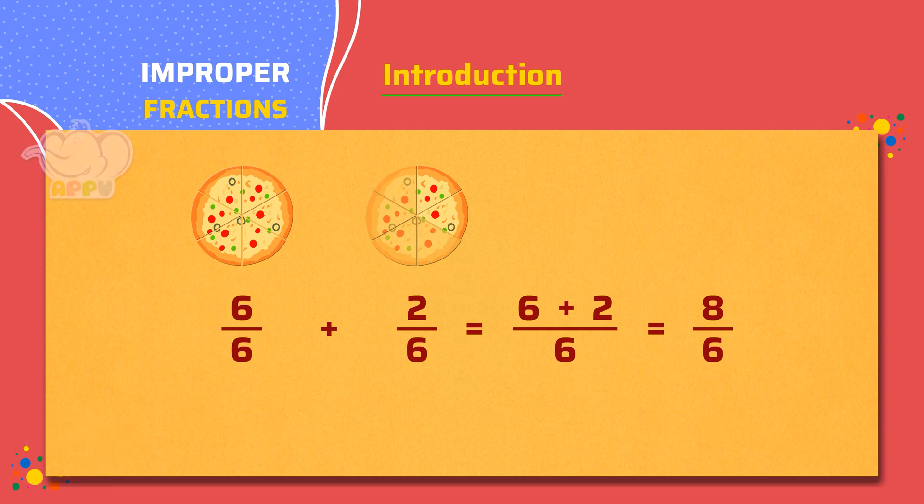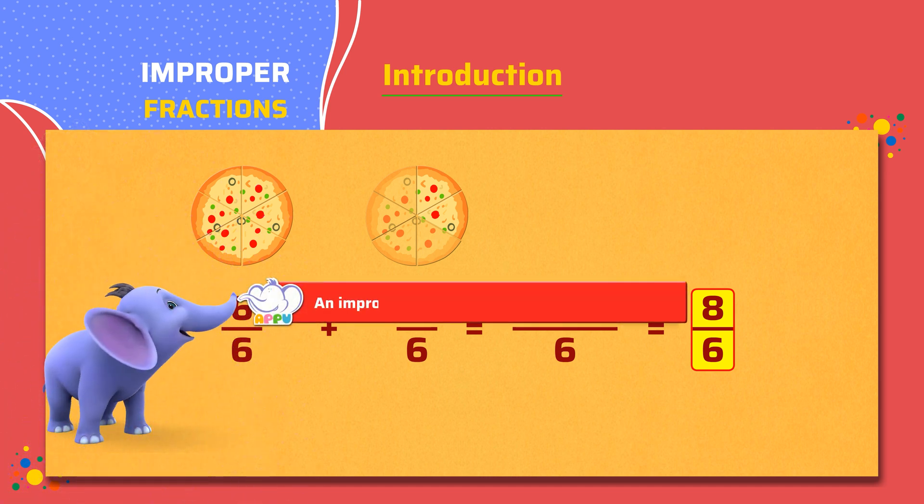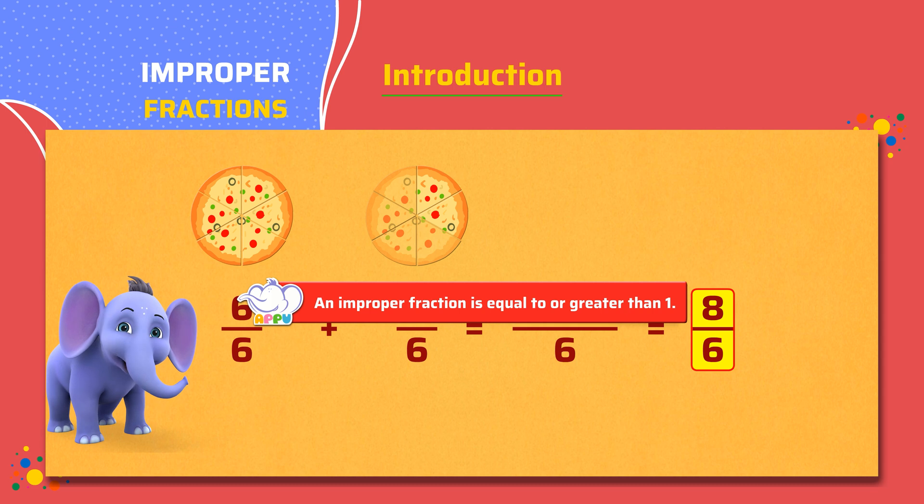Here, the numerator 8 is more than the denominator 6. So, 8 by 6 is an improper fraction. An improper fraction is equal to or greater than 1. Why? Because the numerator is greater than or equal to the denominator.